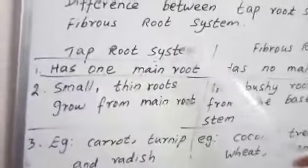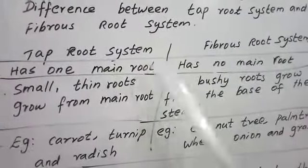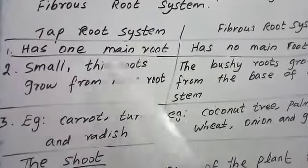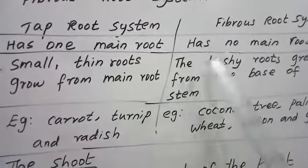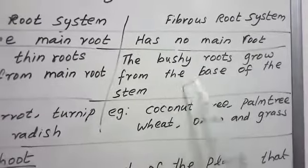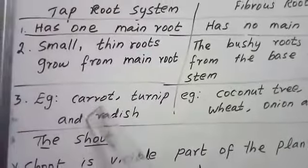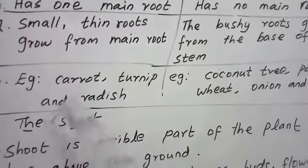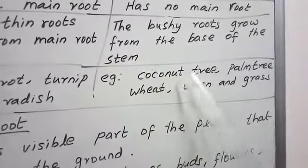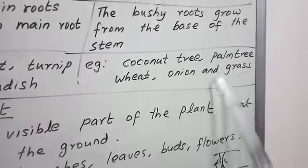So, what is the difference between tap root and fibrous root? Tap root has one main root; fibrous root has no main root. Small thin roots grow from the main root. Bushy roots — b-u-s-h-y — grow from the base of the stem. Examples for tap root: carrot, turnip, and radish. Examples for fibrous root: coconut tree, palm tree, wheat, onion, and grass.